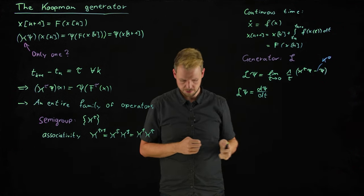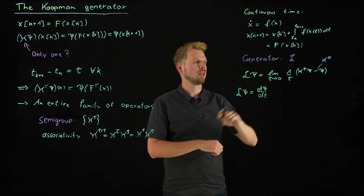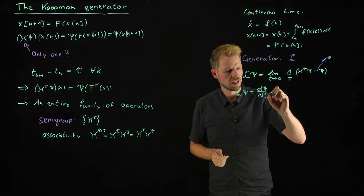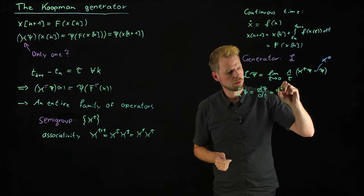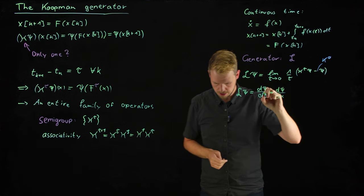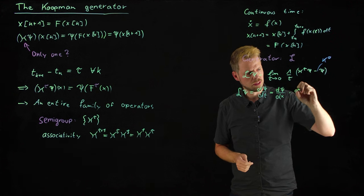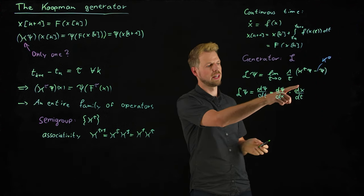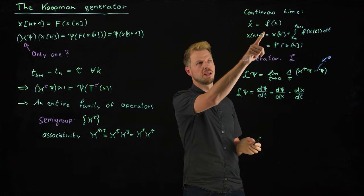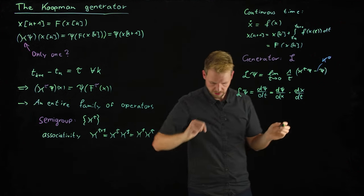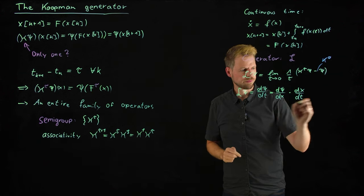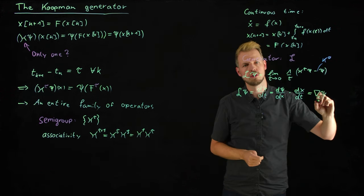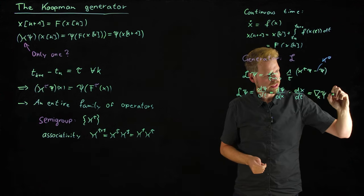So what we get is this, and you can see that we can now use the chain rule. We have seen that psi is a function that takes in the state x, so let's take the chain rule here, which would mean d psi/dx times dx/dt. So simple chain rule.